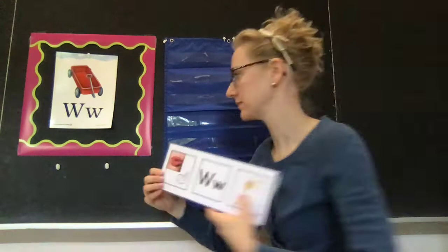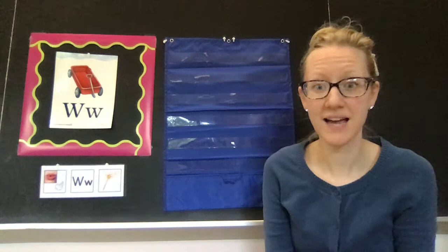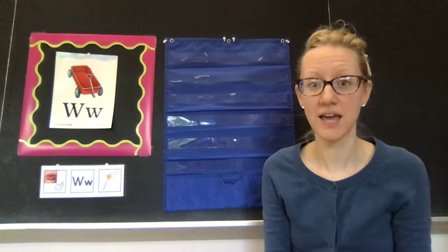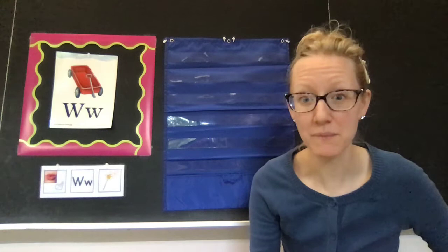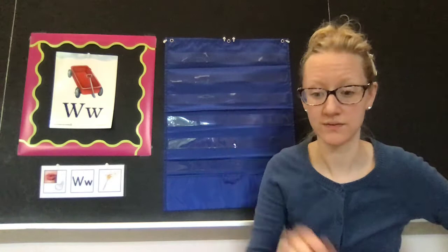My motion for the letter W is a wand. You can pretend like you have a little magic wand and you're going to cast a spell on somebody. Take your wand and say wuh, wuh, wuh. One more time. Take your magic wand, pretend you're going to cast little spells, and make the sound for W. It will help you remember the letter and the sound better. Ready? W says wuh, wuh, wuh.